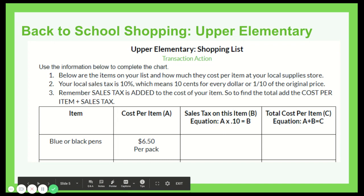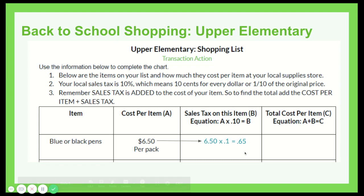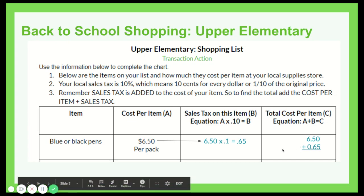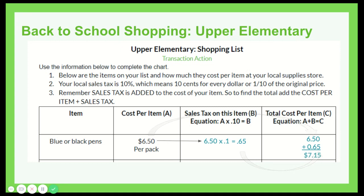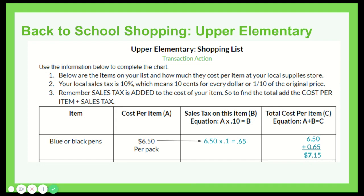Let's say there's a pack of blue or black pens — whichever you prefer — and they come in at $6.50 per pack. First, let's figure out what the sales tax is. We need to find what 10% of $6.50 is, so we take $6.50 and multiply it by 10%, or 0.1. If you calculate that, you'll get 0.65, or 65 cents. Now we take the cost per item and add the sales tax: $6.50 plus $0.65 gives a total of $7.15. So though the price tag says $6.50 on those pens, you'll need at least $7.15 when you get to the cashier in order to walk out of the store having paid for them.